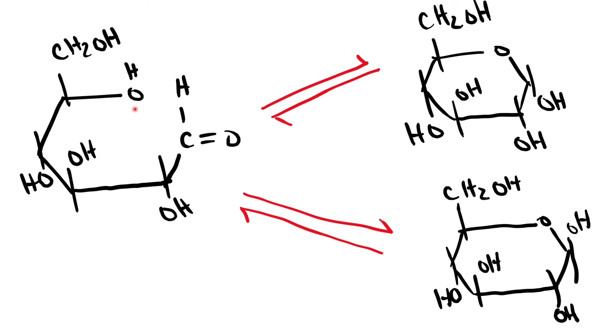So remember, this OH group that was furthest away from the carbonyl, it attacks that carbonyl group. And when it attacks, we can get these two different variations. We can either get alpha or beta. So if the CH2 and the OH group are pointing in opposite directions, which means the OH group is pointing down, this is alpha. But if the OH group is pointing up and it's in the same direction as the CH2OH group, it is going to be beta. So we get these two different variations.